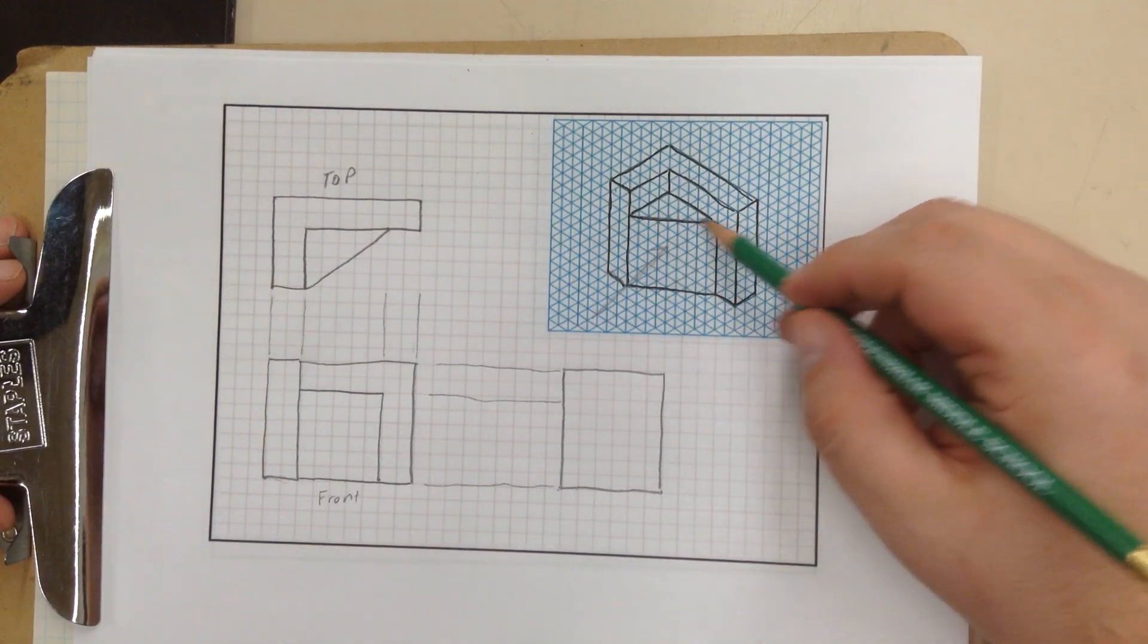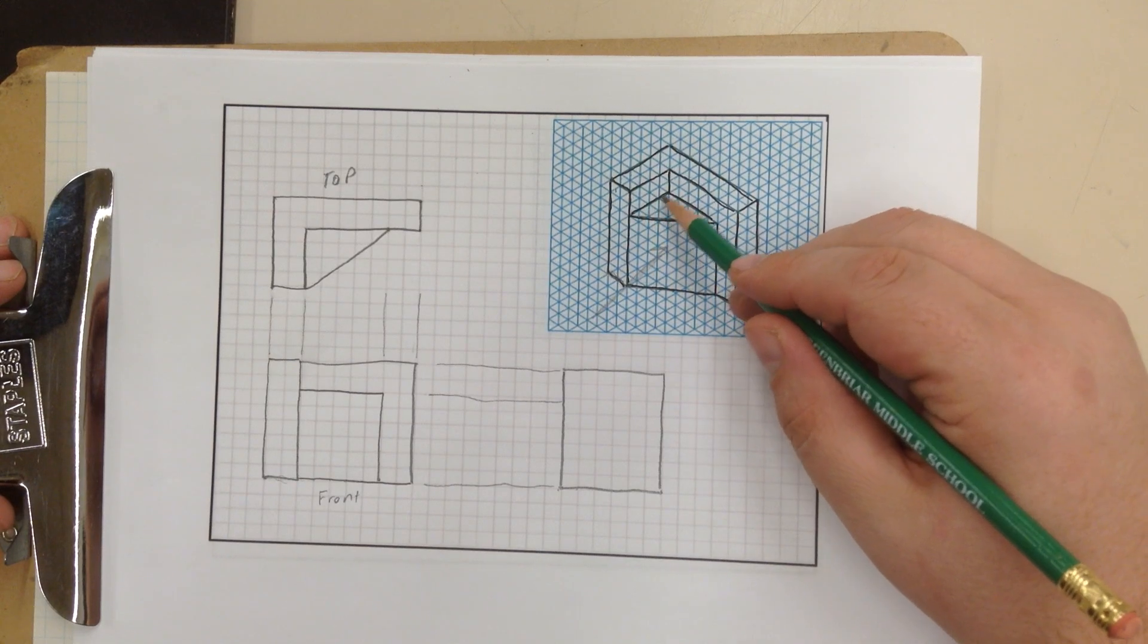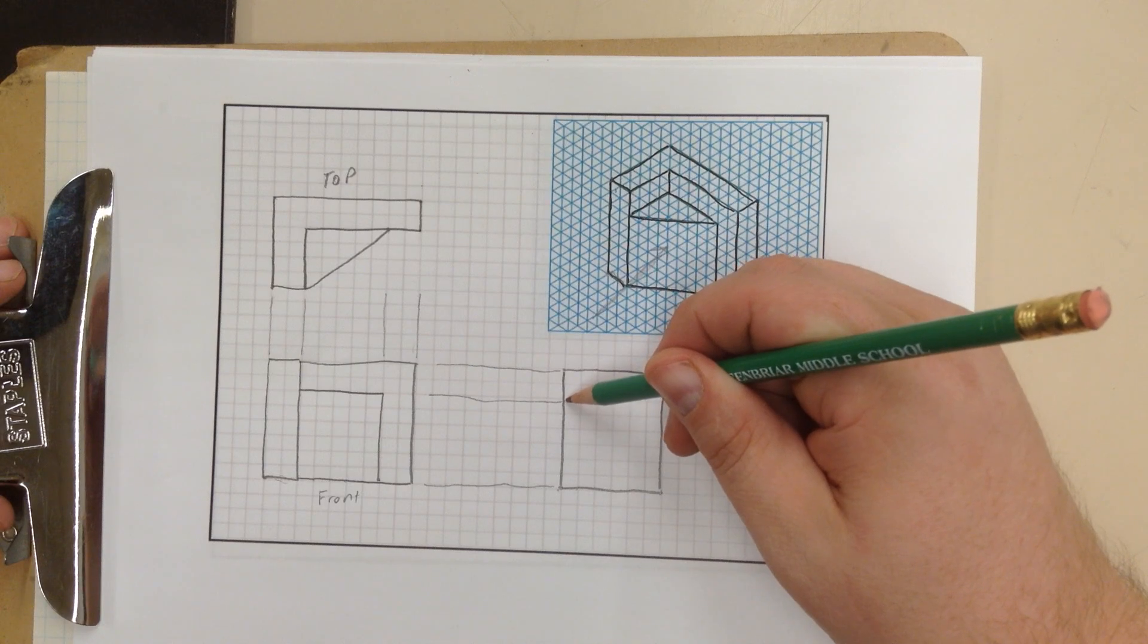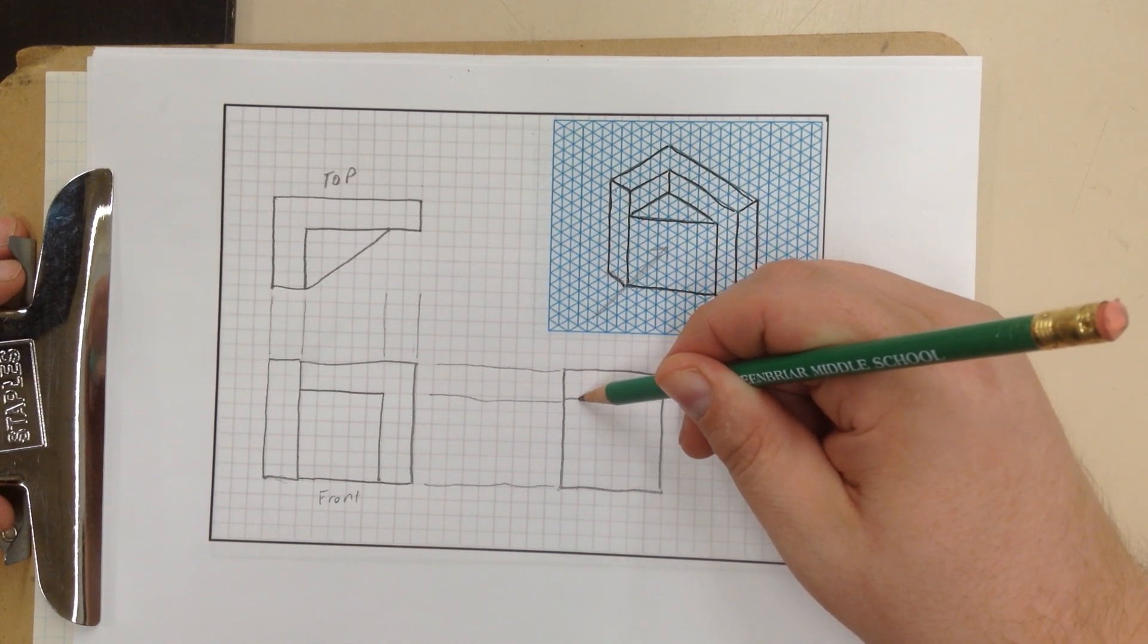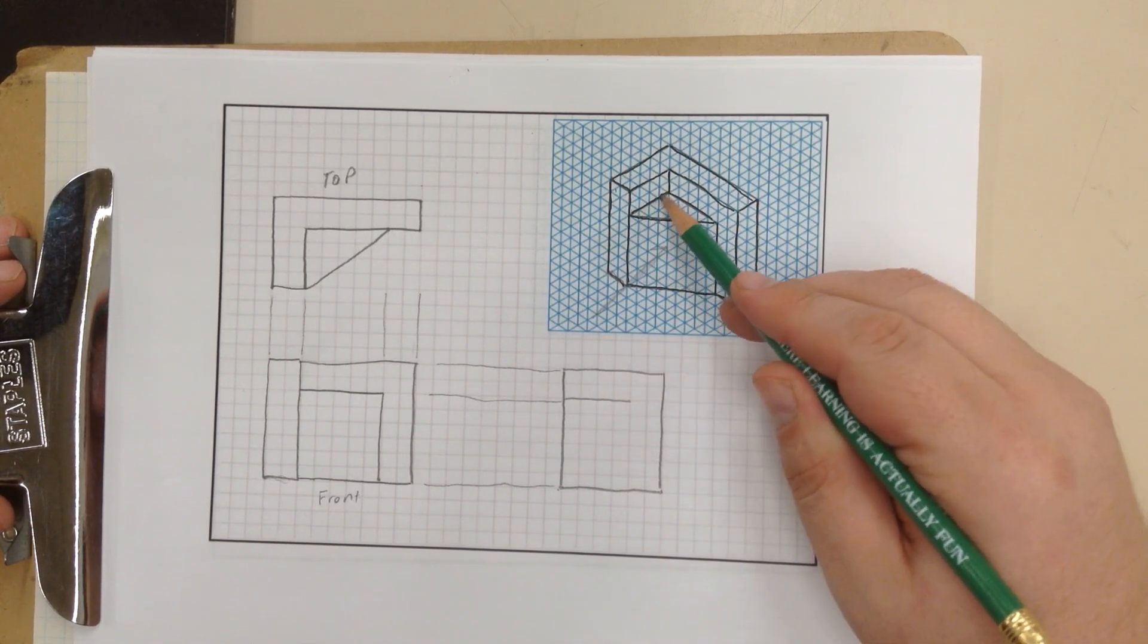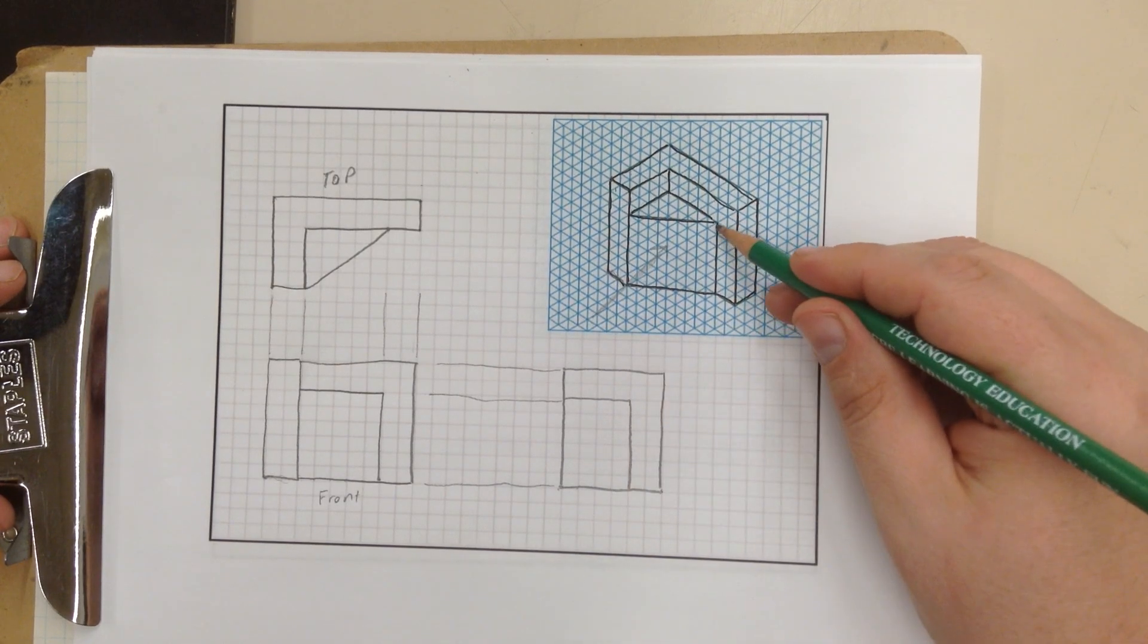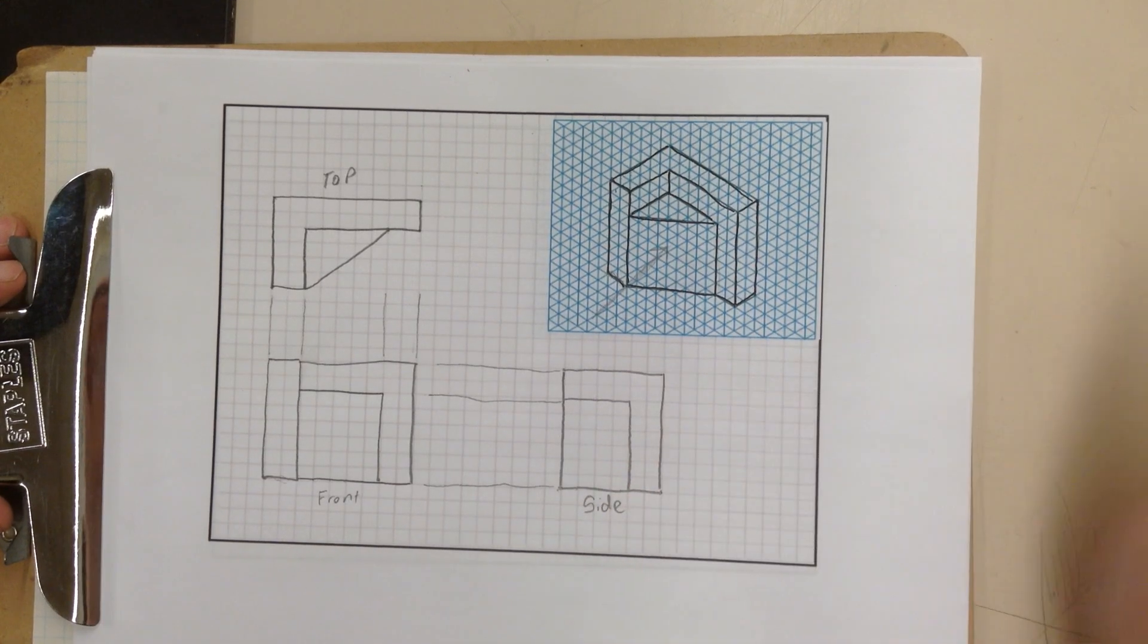Now next I have this triangular piece to contend with. So it's 1, 2, 3, 4. Corresponding with this line. 1, 2, 3, 4, right there. That is this line. Then it goes straight down, which corresponds with that line. And that is my side.